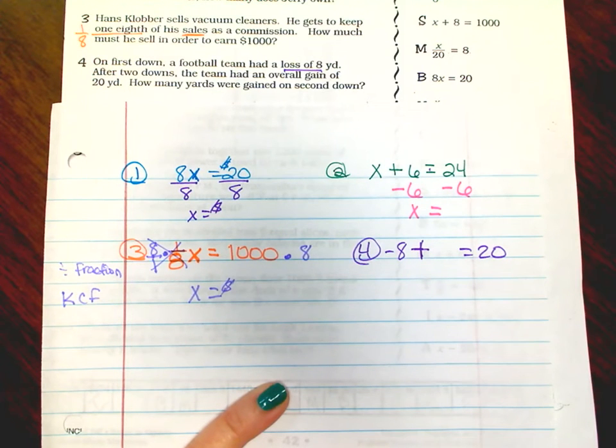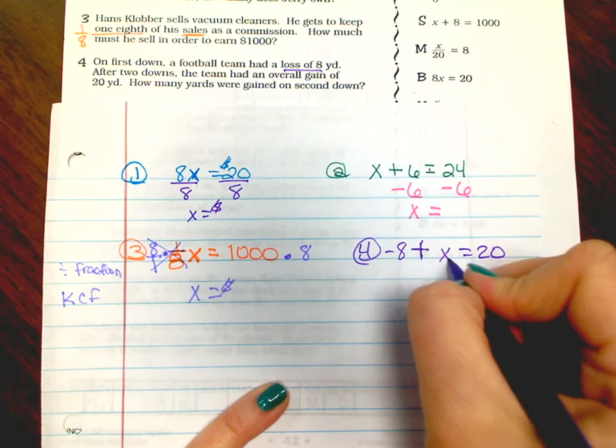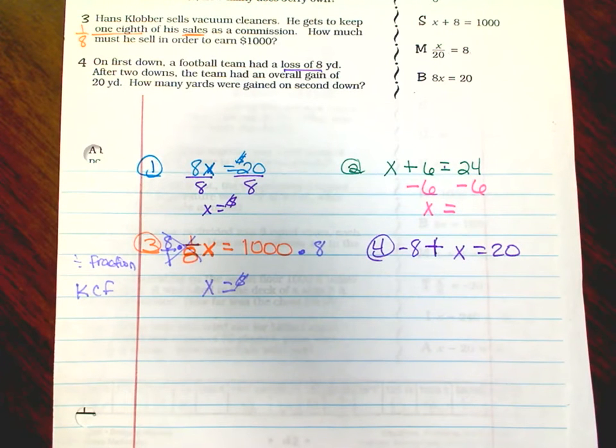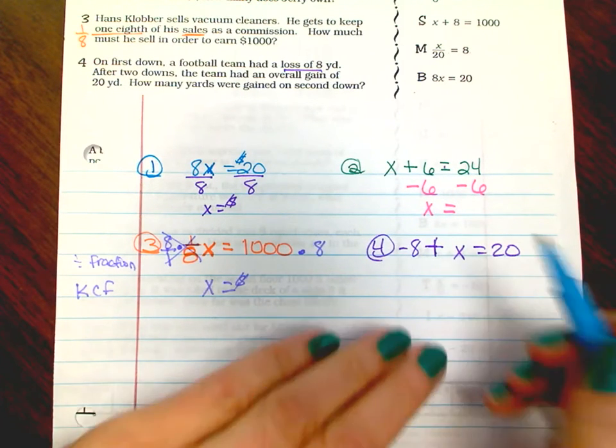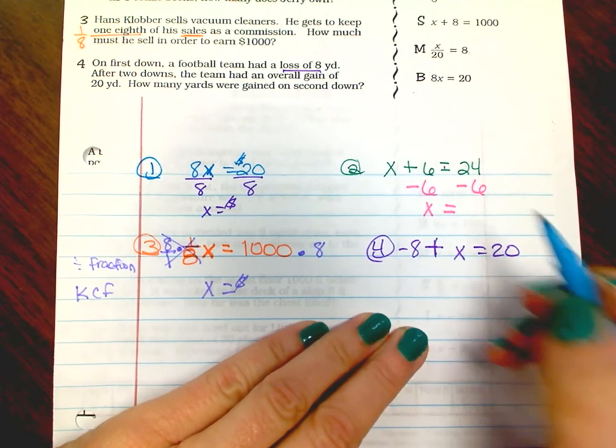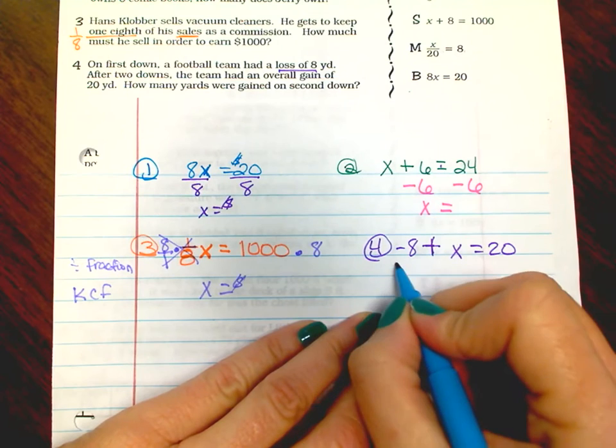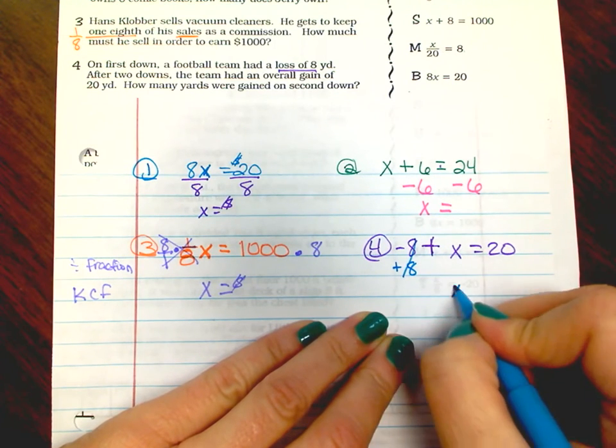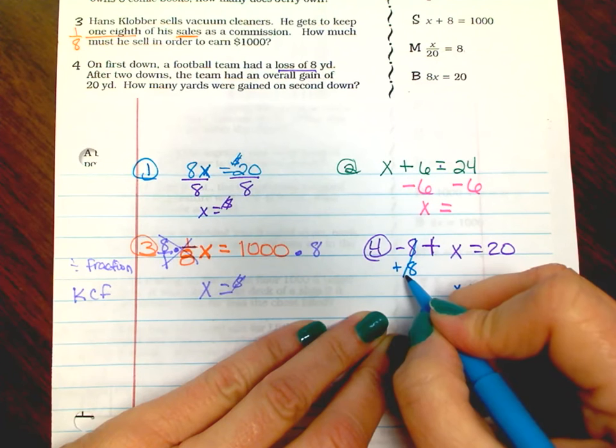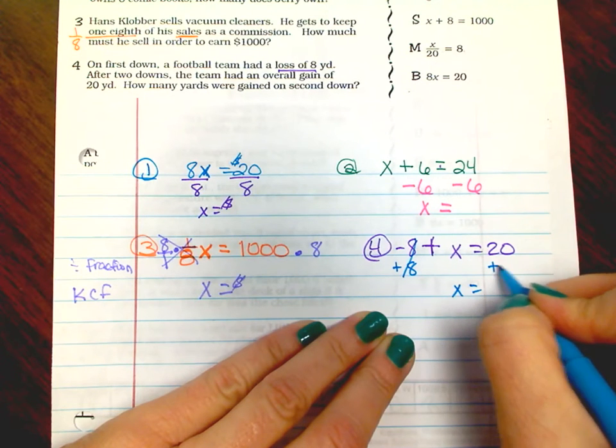What was that gain? That's where your X is. So I need to get X by itself, so I need to cancel this eight out. It's negative, I need to add it. That makes zero, leaves me with X. If I do it to this side, I must do it to this side.